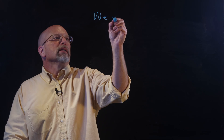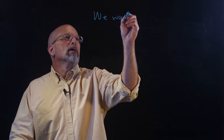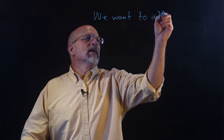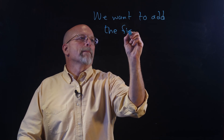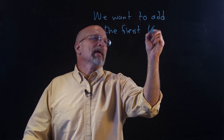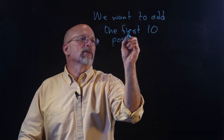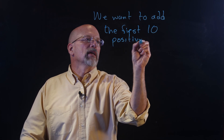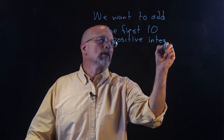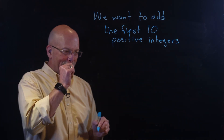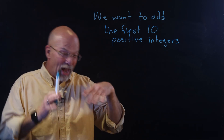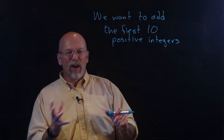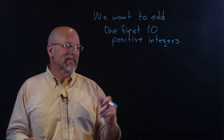Let's assume we want to add the first 10 positive integers. Pretty simple — we're just going to add one, two, three, and so on together. But how do we write this down?